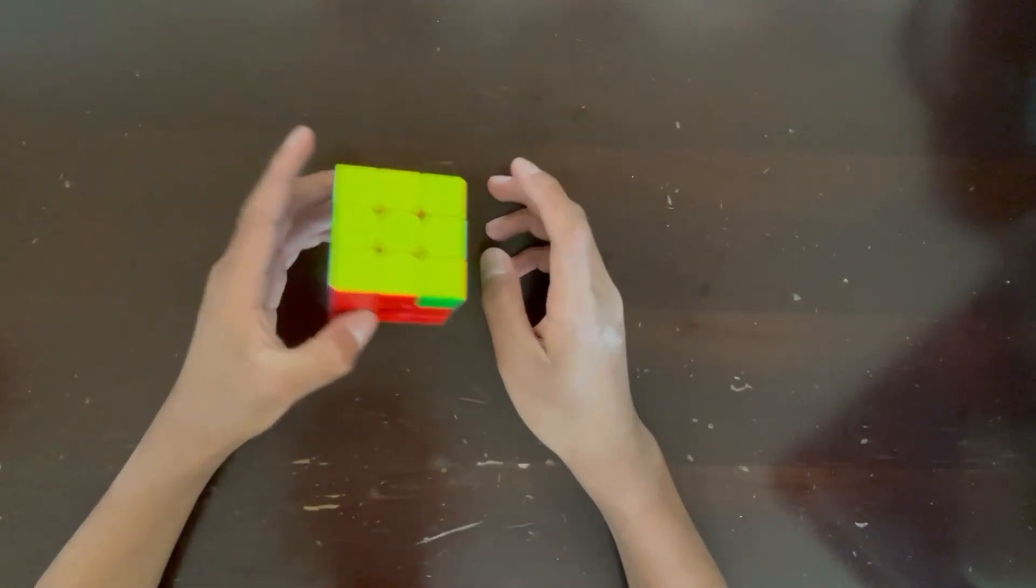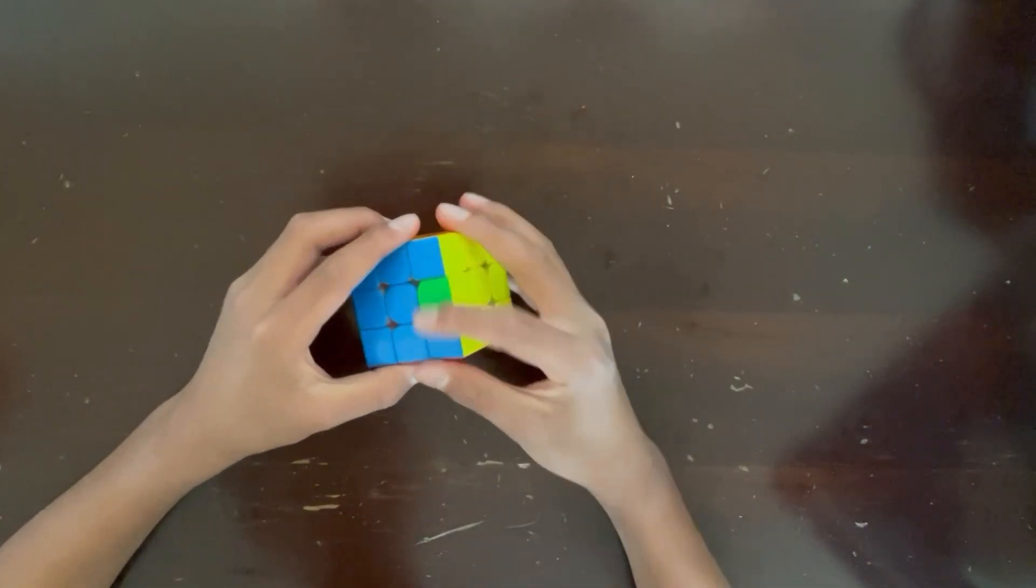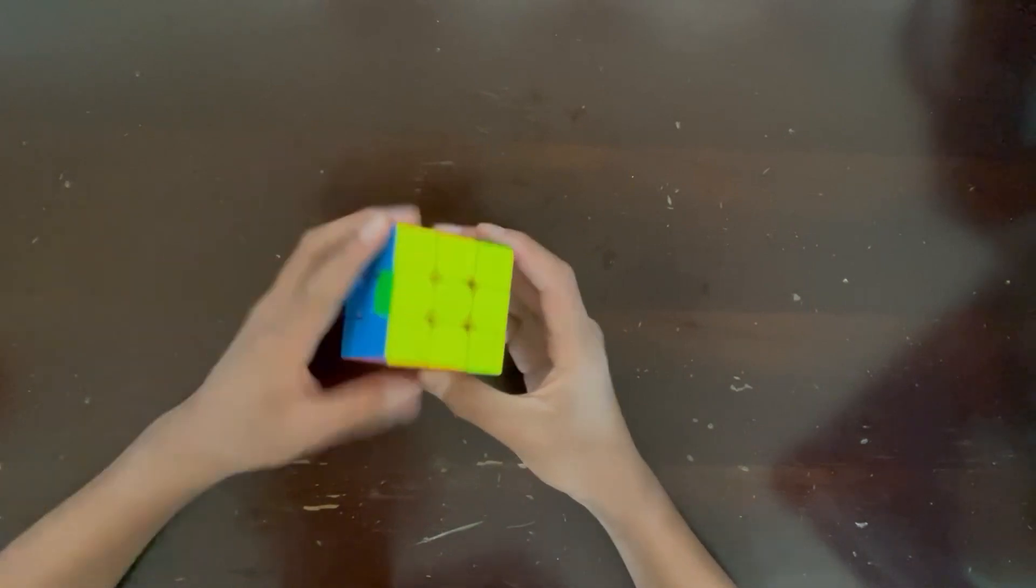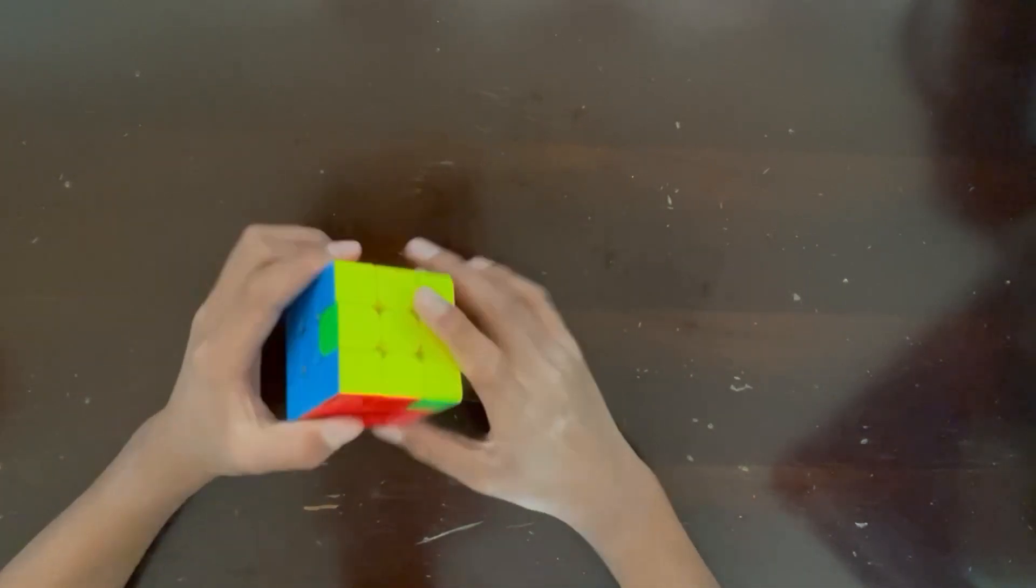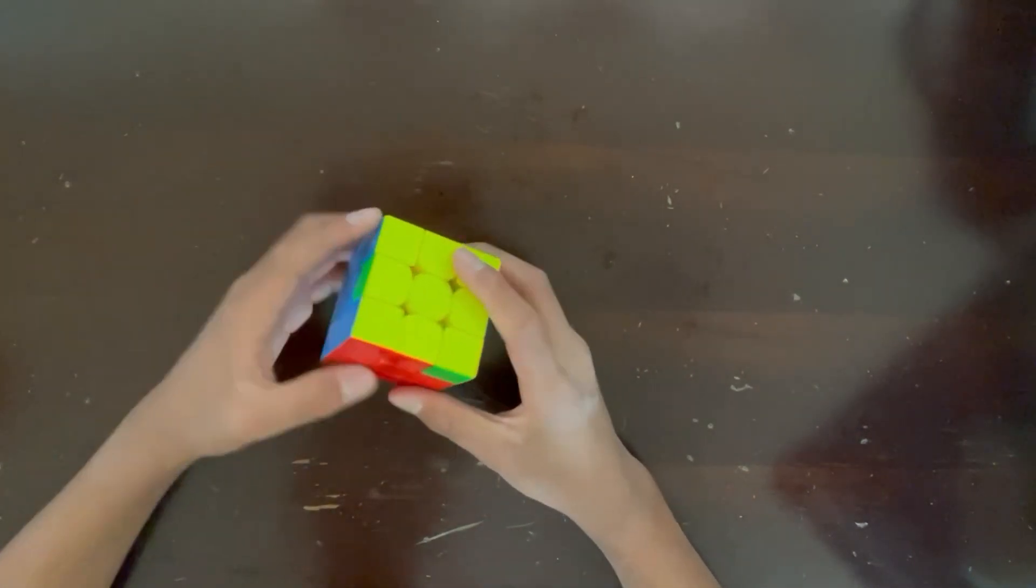So to line this up, what you have to do is look at the headlights and then make sure that they're facing to the left, which is that way. Then hold your cube so that the headlights are facing to the left, and do this algorithm.